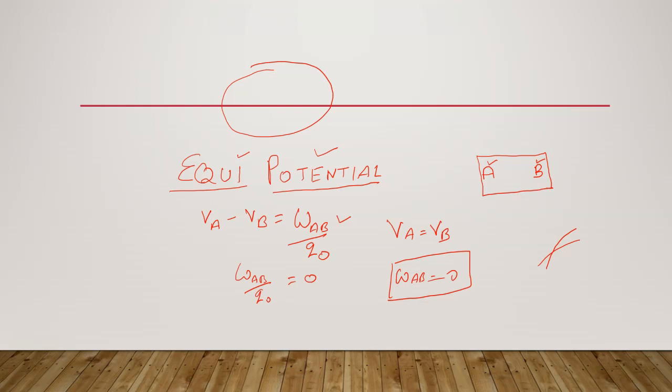I hope you have understood the meaning of equipotential surface and why the work done is 0 while moving a charge within the equipotential surface. Thank you.